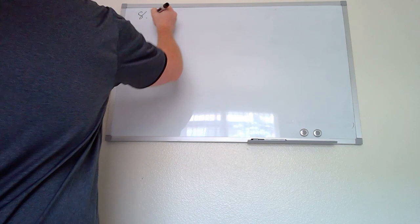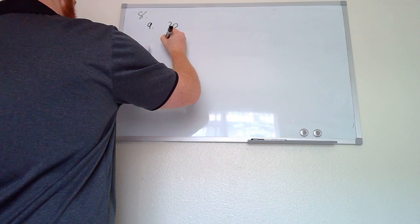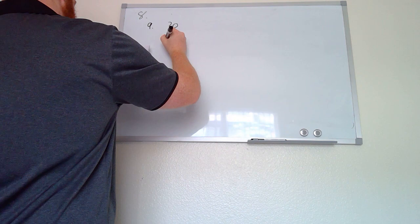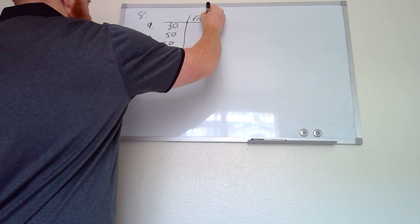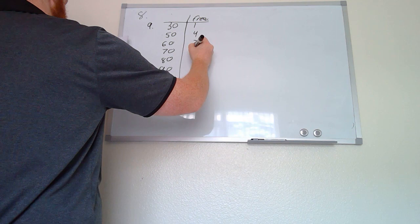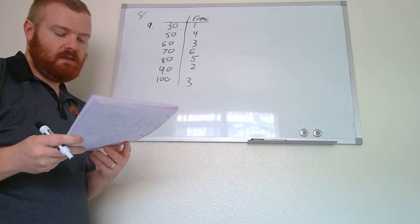For question eight, we're given a table of math test scores and asked to complete a frequency table, which shows how many times each score occurs. Looking through all the scores, we see: 30 appears 1 time, 50 appears 4 times, 60 appears 3 times, 70 appears 6 times, 80 appears 5 times, 90 appears 2 times, and 100 appears 3 times. That is the frequency table.